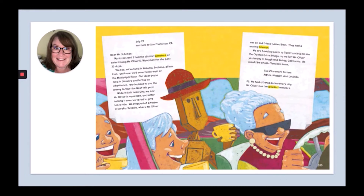July 27th, en route to San Francisco, California. Dear Mr. Johnson, my sisters and I had the distinct pleasure of entertaining Mr. Oliver K. Woodman for the past 23 days. We've lived in Kokomo, Indiana all our lives — until now, we'd never been west of the Mississippi River. Our dear Papa died in January and left us an inheritance, and we decided to use the money to tour the west this year. While in Salt Lake City, we saw Mr. Oliver in a parade and voted to give him a ride. We stopped at a rodeo in Eureka, Nevada, where Mr. Oliver met an old friend named Bert. We are heading south to San Francisco to see the Golden Gate Bridge, so we left Mr. Oliver yesterday in Rough and Ready, California — he should be at Miss Tamika's soon. The Claremont sisters, Agnes, Maggie, and Lucinda. P.S. We had afternoon tea every day — Mr. Oliver has the loveliest manners.